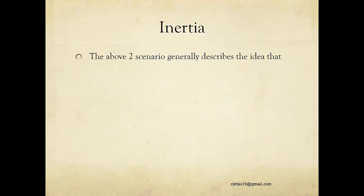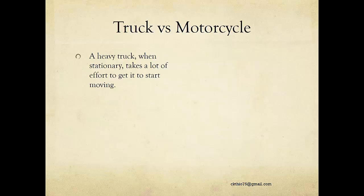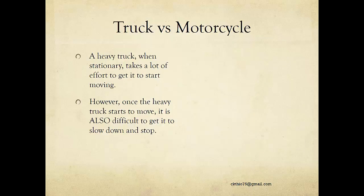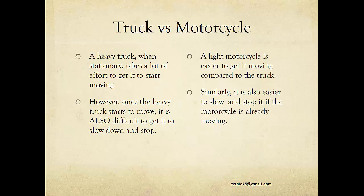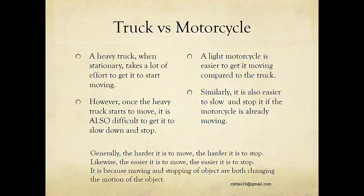The two scenarios describe how the mass of an object determines how it resists a change in its state of rest or motion. A heavy truck takes a lot of effort to start moving, but once moving it is also difficult to slow down and stop. A light motorcycle is easier to get moving, but it is also easier to slow down and stop. The harder it is to move, the harder it is to stop — because both are changing the motion of the object.